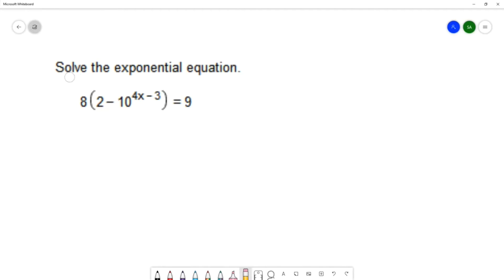For this question, we want to solve the exponential equation: 8 times 2 minus 10 to the 4x minus 3 equals 9.